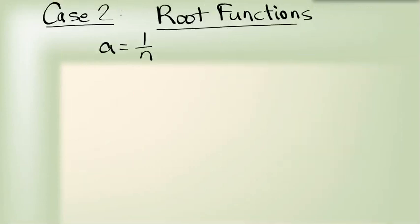Case 2, we have root functions, where a equals 1 over n, and n must be a positive integer. What does this look like?